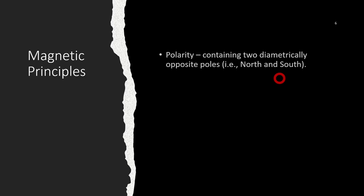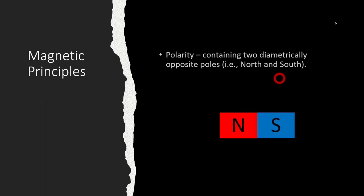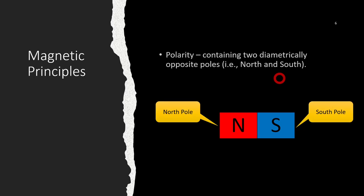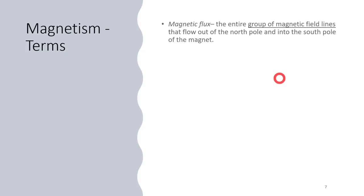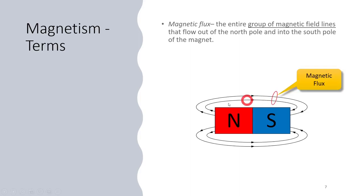Polarity talks about the opposite poles, north and south, so we're able to distinguish one end from another. There's going to be a distinguishable north pole and a distinguishable south pole - the north pole labeled with the letter N, the south pole with the letter S. Magnetic flux is the entire group of magnetic field lines that flow out of the north and into the south. All of those lines together is called the flux.